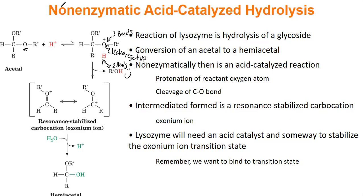Once we protonate the oxygen, that group can leave, and we're left with an intermediate carbocation. A carbocation is basically a positively charged carbon — they don't last very long, but they do exist. Here are our two resonant structures: one with the positive charge on the oxygen, the other with the positive charge on the carbon. The right form is probably more prevalent since oxygen does not want to be positively charged. This intermediate is called the oxynonium ion, and since it's our intermediate, this is what the enzyme will try to bind to.